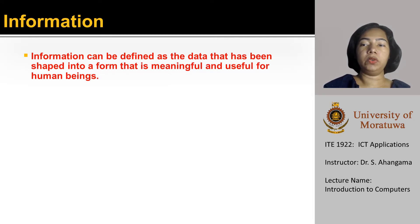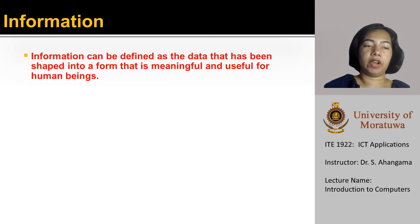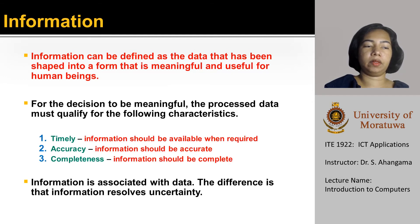Let us move to understand what information is. Information is organized or classified data, which has some meaningful values for the receiver. Information can be defined as the data that has been shaped into a form that is meaningful and useful for human beings.